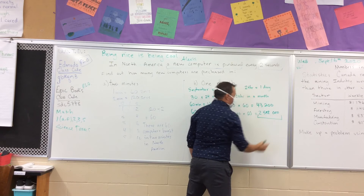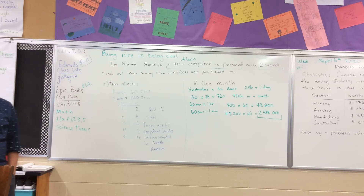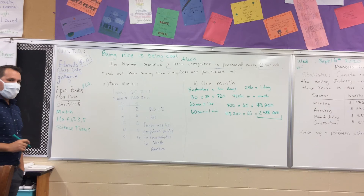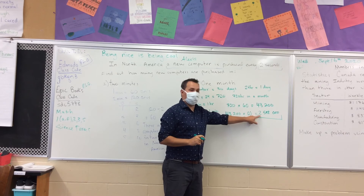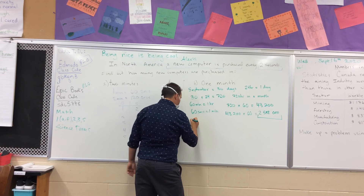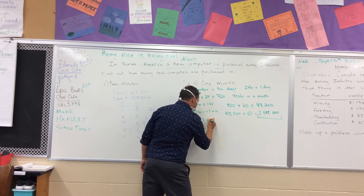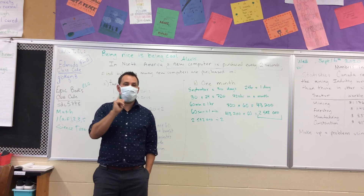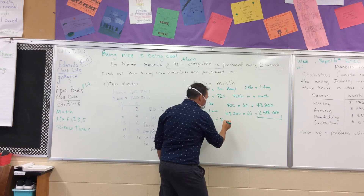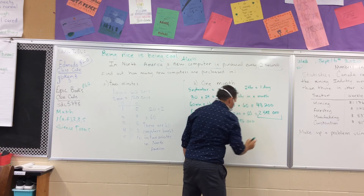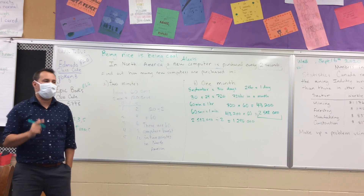How do we take that and figure out the number of computers? We divide by two because one computer is bought every two seconds, not every one second. So we take 2,592,000 and divide it by two — cut it in half. That equals 1,296,000. So 1,296,000 computers are bought in one month.